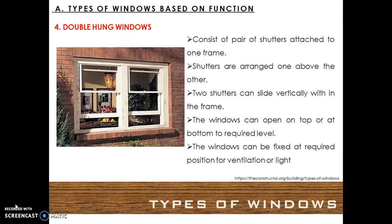Double hung windows. These consist of a pair of shutters attached to one frame, arranged one above the other. Both shutters can slide vertically within the frame. The windows can open at the top or at the bottom to the required level, and can be fixed at the required position for ventilation or light.